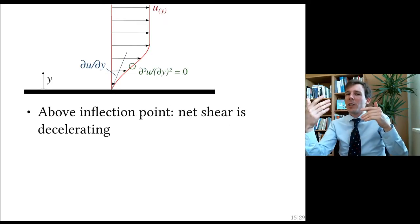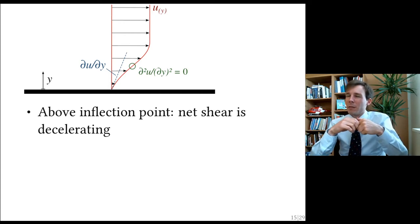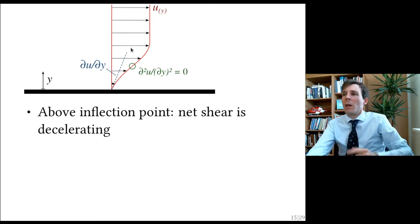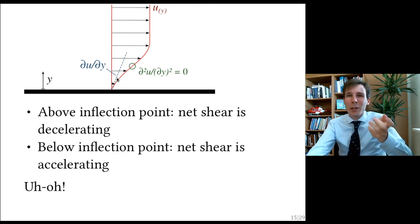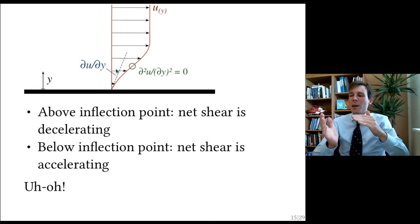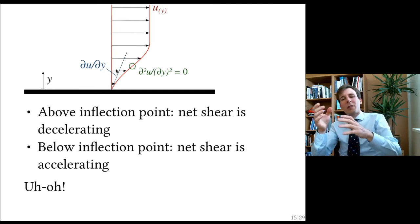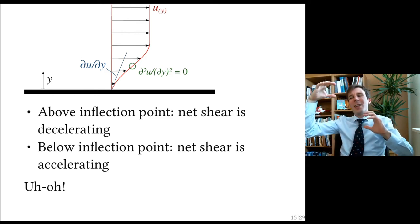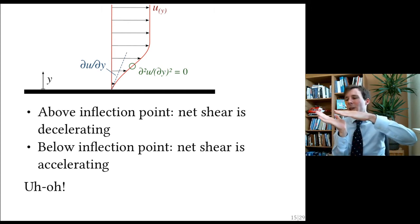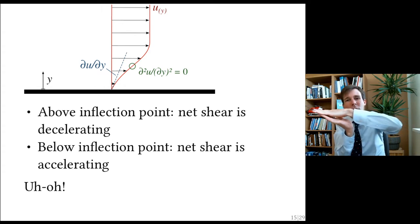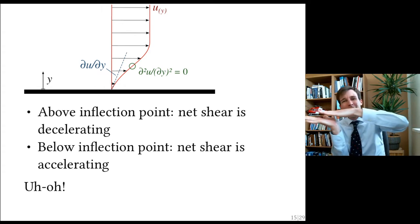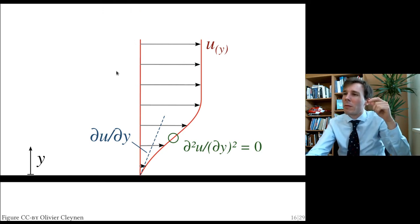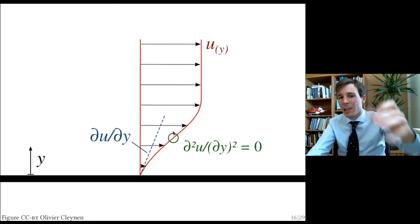Above the inflection point, the net shear is decelerating — the derivative is negative, meaning a particle placed there will be slowed down progressively. But below the inflection point, a particle will be accelerated through the flow. So as soon as you have an inflection point, particles below are accelerated while particles above are decelerated. The boundary layer crumples over itself — like sheets of paper rubbing against each other. As soon as you have inflection points, your boundary layer is likely to separate. This is the main idea.